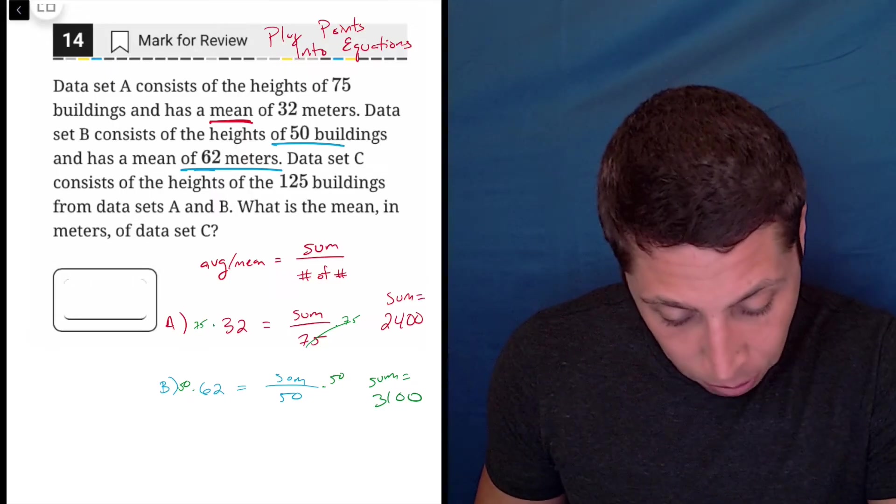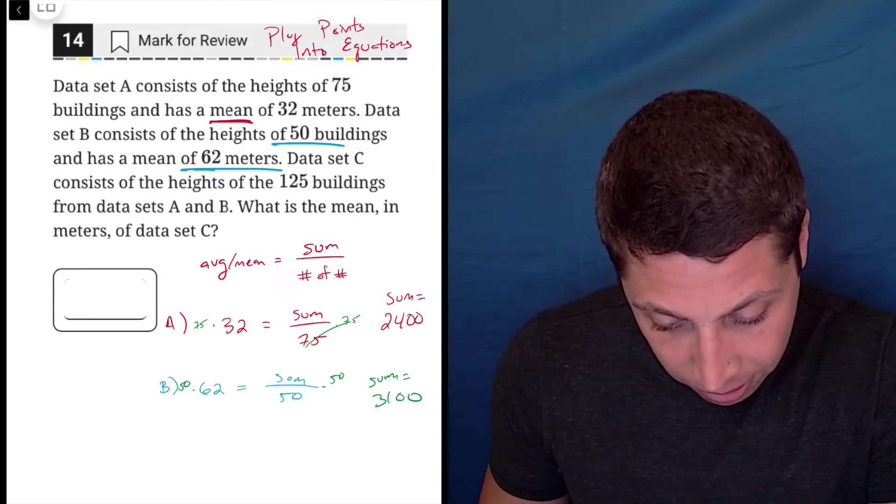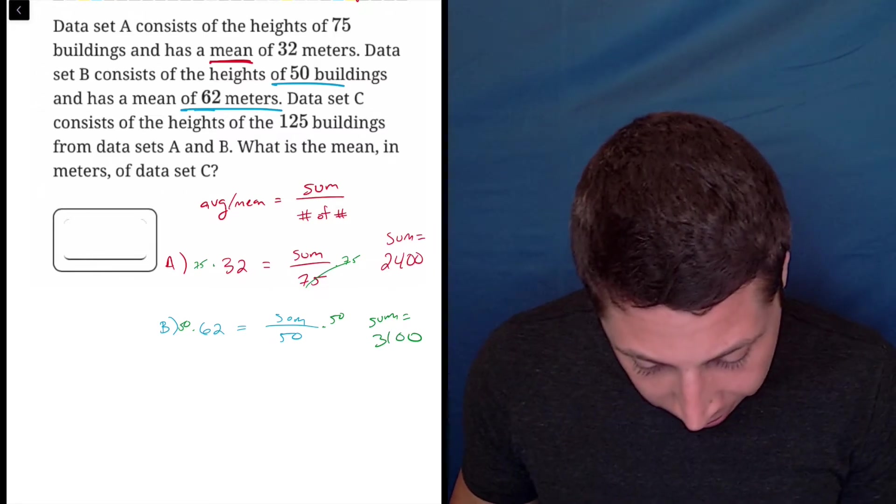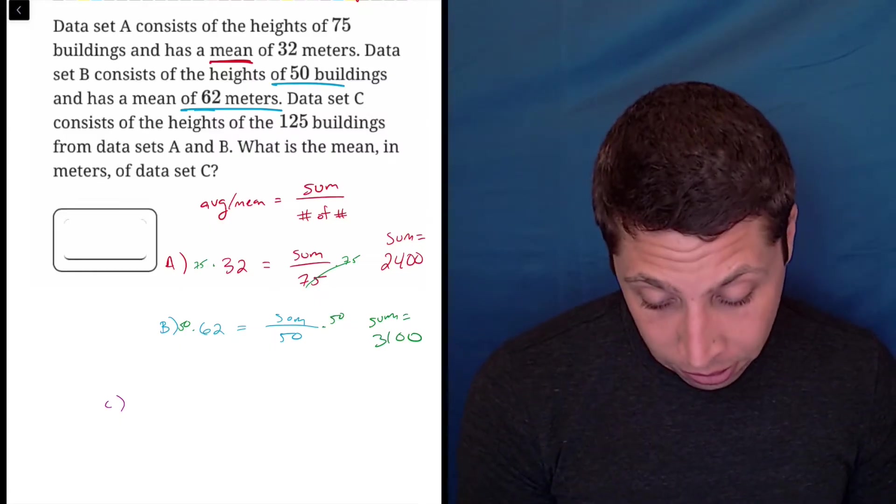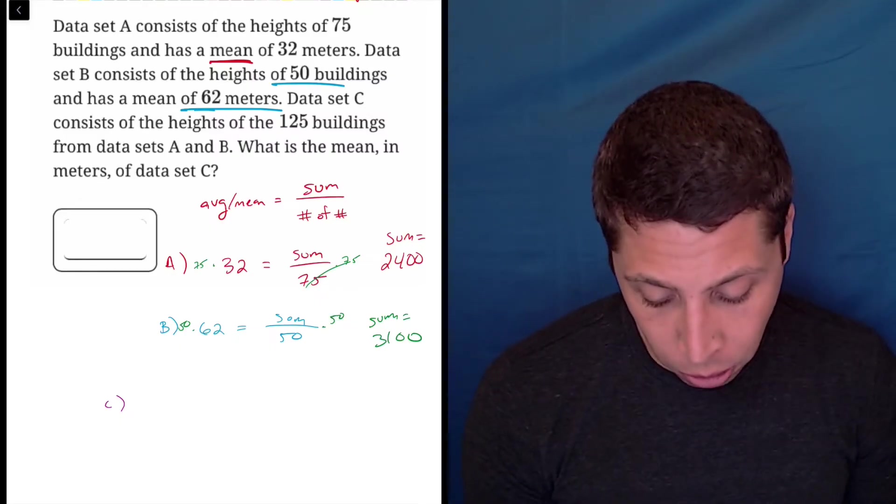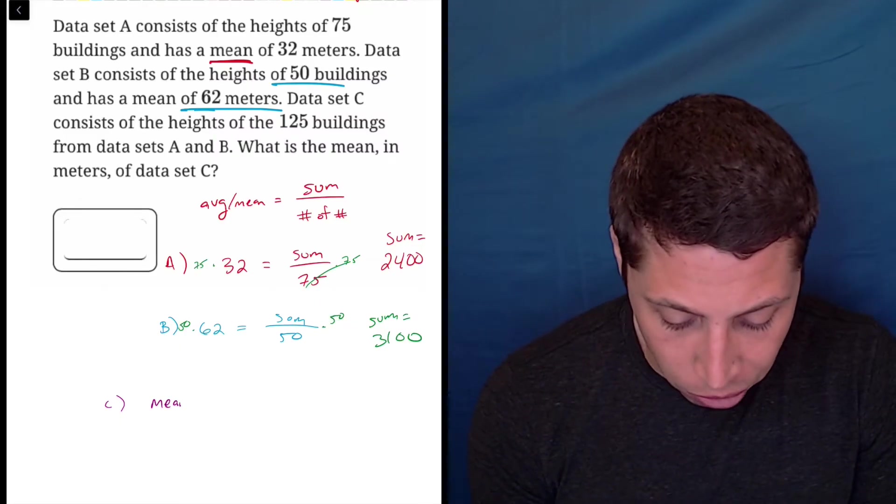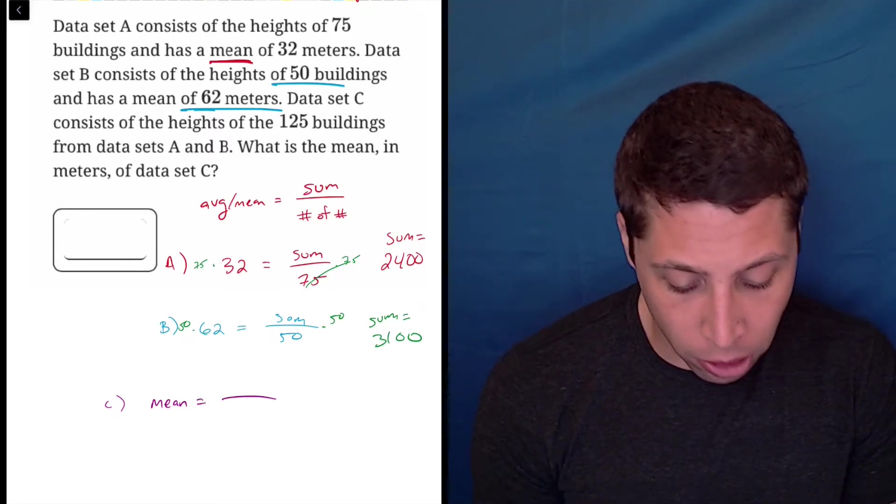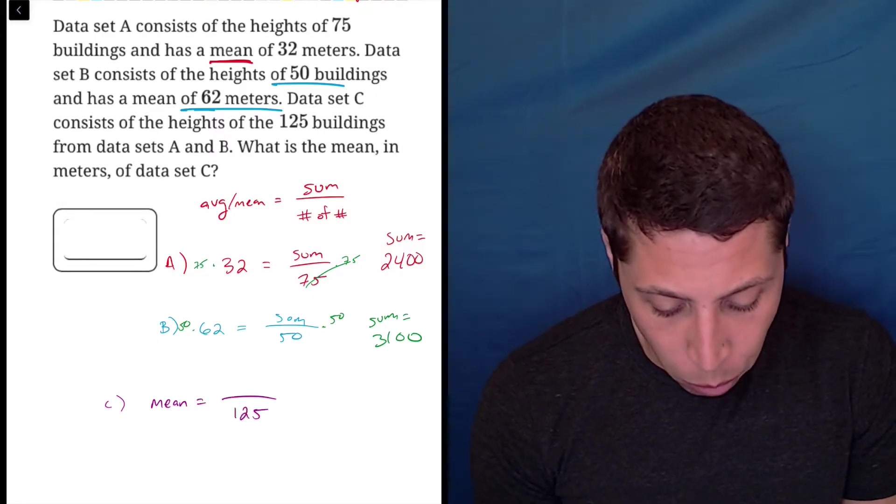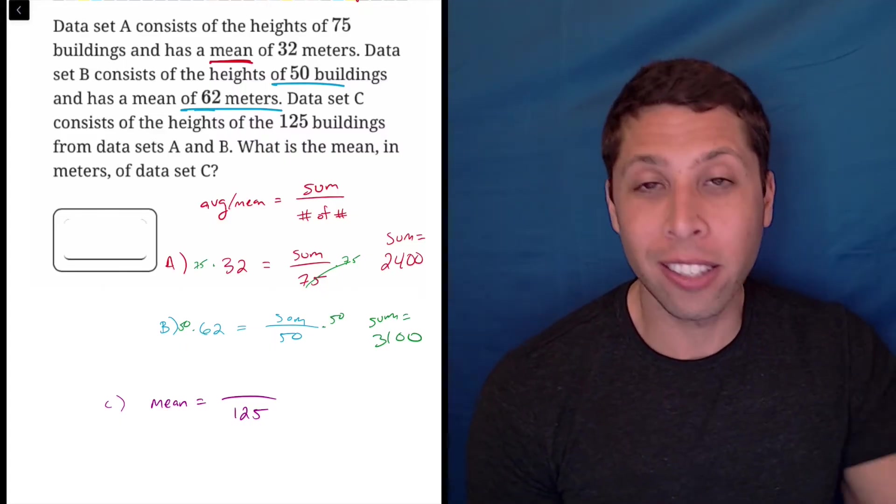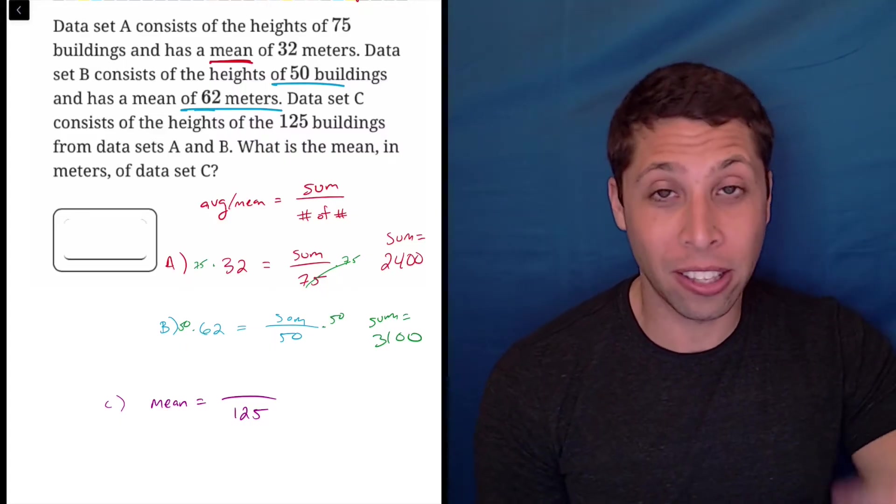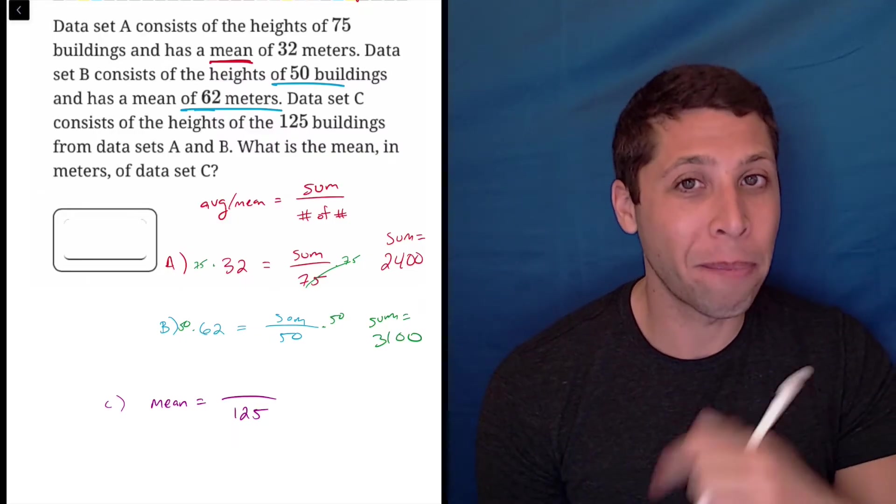Now they've got data set C. So data set C, the heights of the 125 buildings, what is the mean in meters? So the mean now is the thing I'm going to solve for. So now that's going to be my unknown. They tell me it's 125 buildings. The sum can't really be unknown. If I need to solve for the mean, that means that the sum must be something I know.